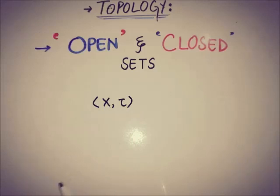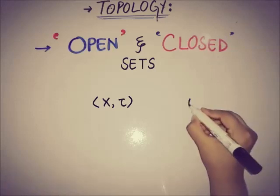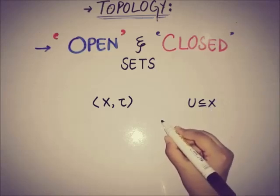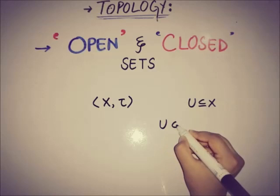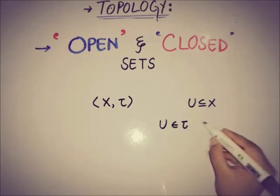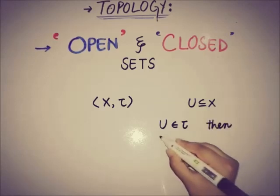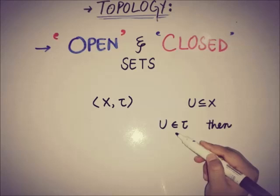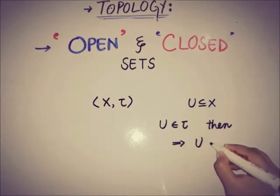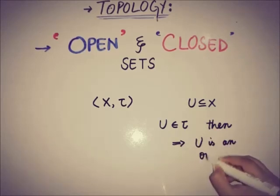Now we will see what exactly open and closed sets are. If we have a subset, let's say u, where u is a subset of x such that u belongs to the collection of subsets of x, that is tau, then this implies that u is an open set.